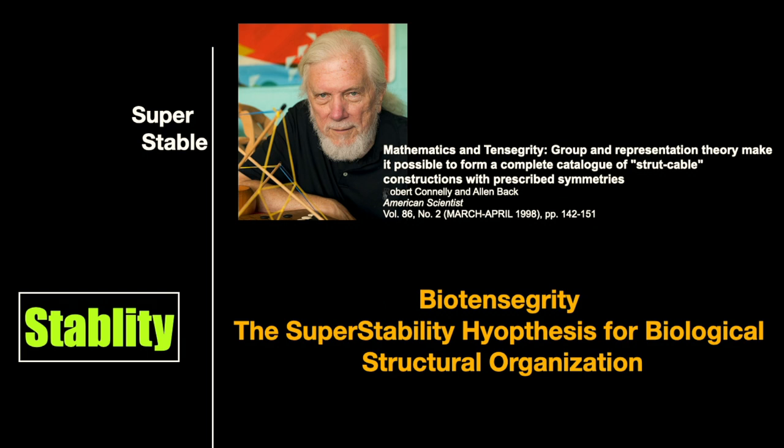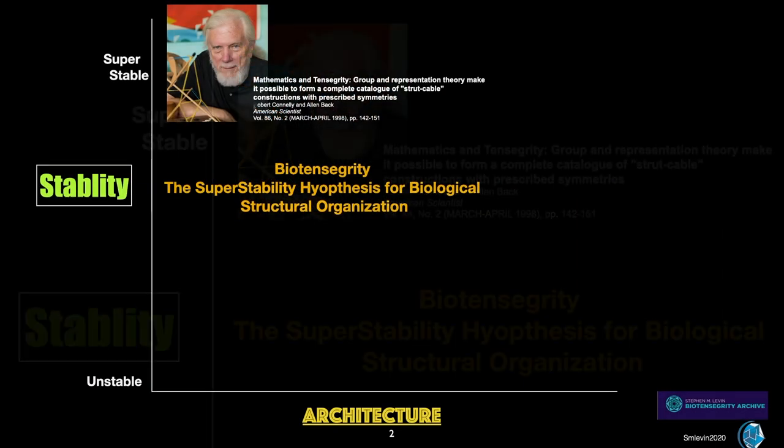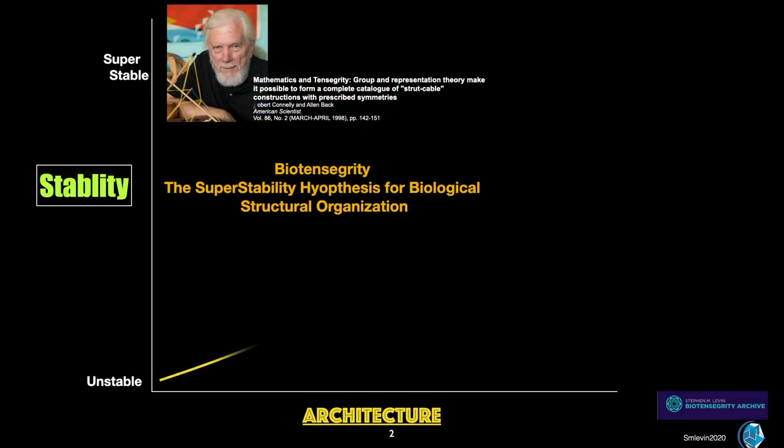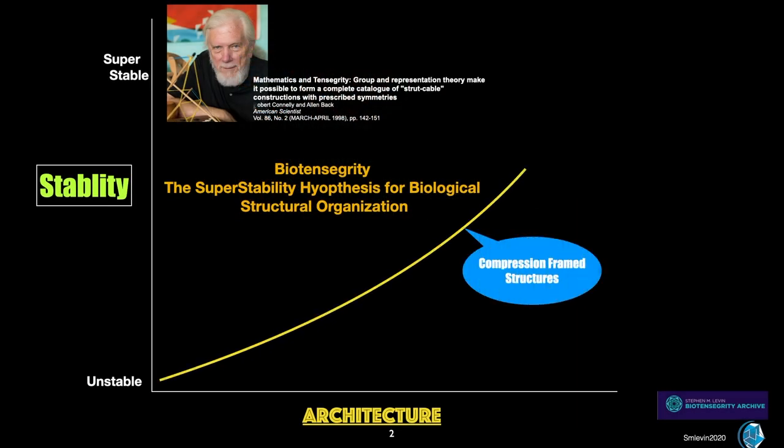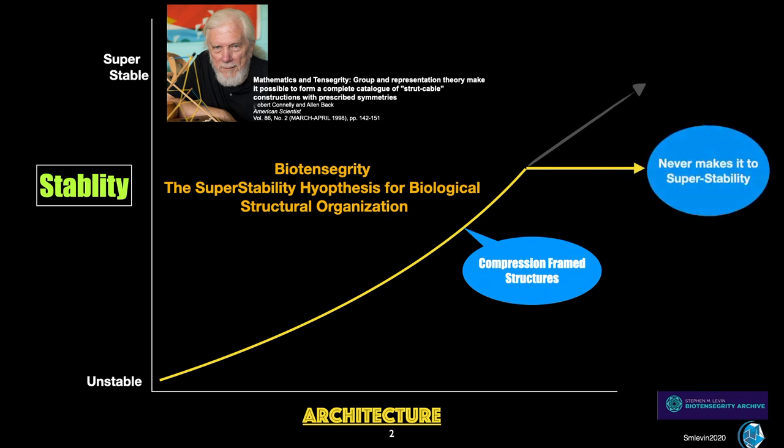Here in simple non-mathematical terms, we have a graph that exhibit the varying stabilities. Gravity-loaded compression structures going from the least stable to the most stable. Logically, we should be able to continue this line until we hit superstability. But that never happens. The compression frame structure's curve flattens out and never makes it to superstability.